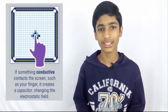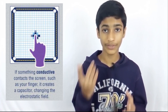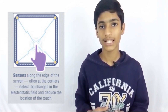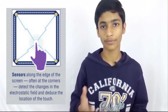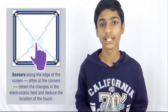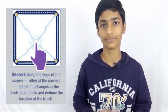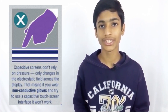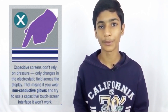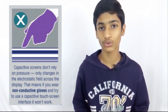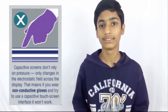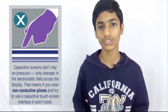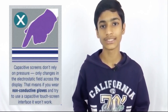If something conductive touches the screen, such as your finger, it creates a capacitor, changing the electrostatic field. Sensors along the edge of the screen, often at the corners, detect the changes in the electrostatic field and determine the location of the touch. Capacitive screens don't rely on pressure, only changes in the electrostatic field across the display. That means if you wear non-conductive gloves and try to use a capacitive touch screen interface, it won't work.